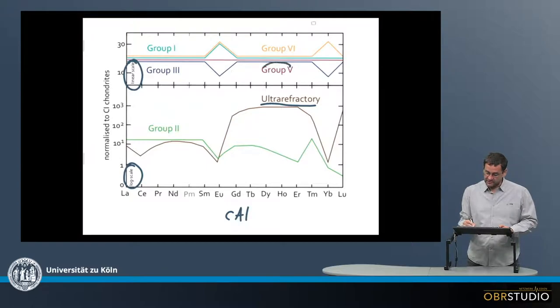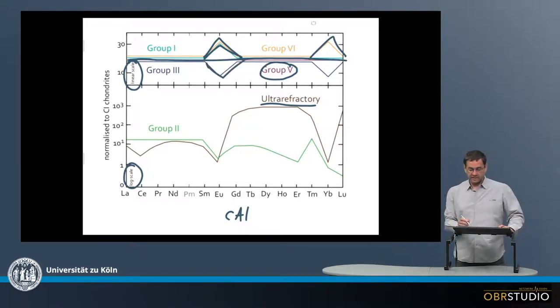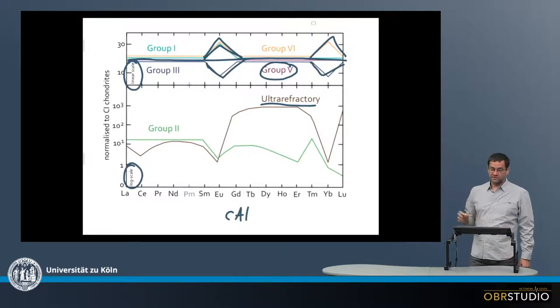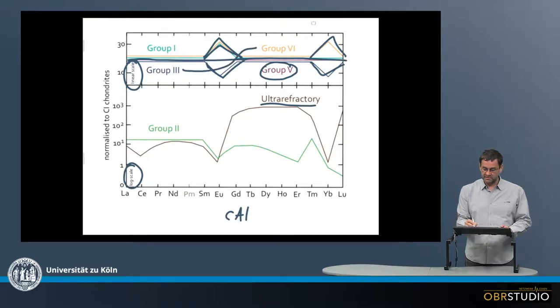Now group five is the one pattern that is completely and entirely flat. Then there are three patterns left. There's one pattern that has positive anomalies in europium and ytterbium, one pattern that has only a positive europium anomaly, and one pattern that has negative europium and negative ytterbium anomalies. This is group three, and group three is basically complementary to group four.